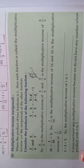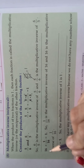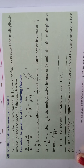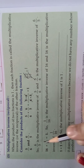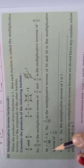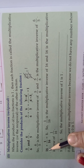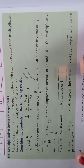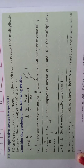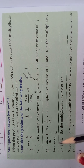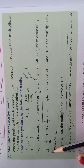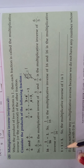We will see one more example. 16 × 1/16 = 1. So what is the inverse of 16? The inverse of 16 is 1/16, and the inverse of 1/16 is 16. This is the reciprocal — the reciprocal of 16 is 1/16.